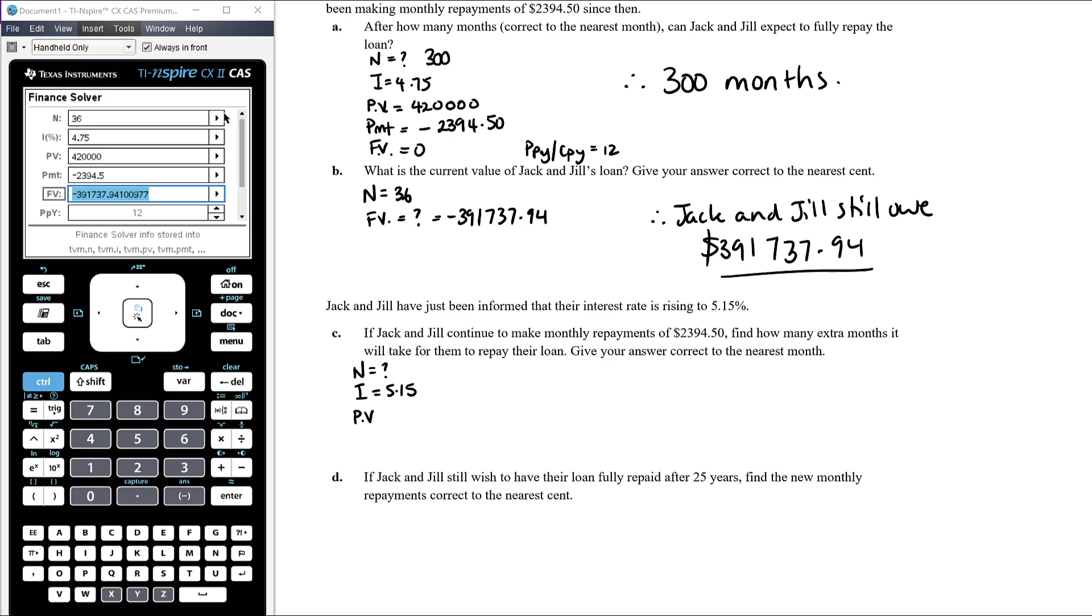Our interest rate has now changed to 5.15%. Our present or principal value, now it's almost like thinking we're starting a new loan. This value here, that's how much the loan is worth after three years. At this point we're changing the interest rate, so this value is now the principal value of what is essentially a new loan. Okay, and again that's borrowed money, so that is money that the bank has paid to us that we then still need to pay back to the bank. So that is positive in terms of the finance solver. Okay, payment, they're going to continue to make the same payments, so payment will be negative 2394.5. And we want to know how many months it will take for them to pay it off under these conditions, so we want the future value to be zero. Again, payments per year and compounds per year are still going to be 12 because everything's monthly.